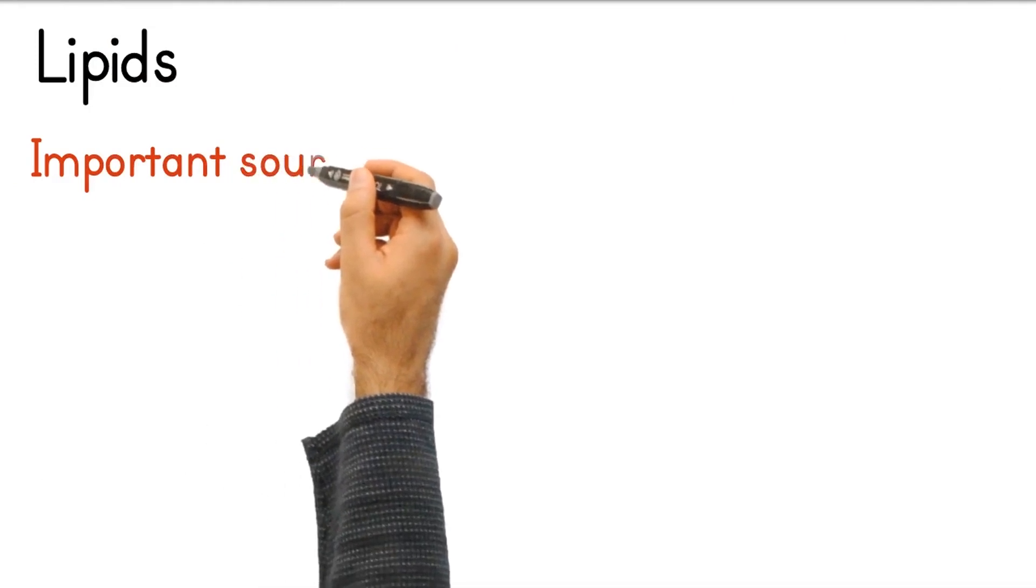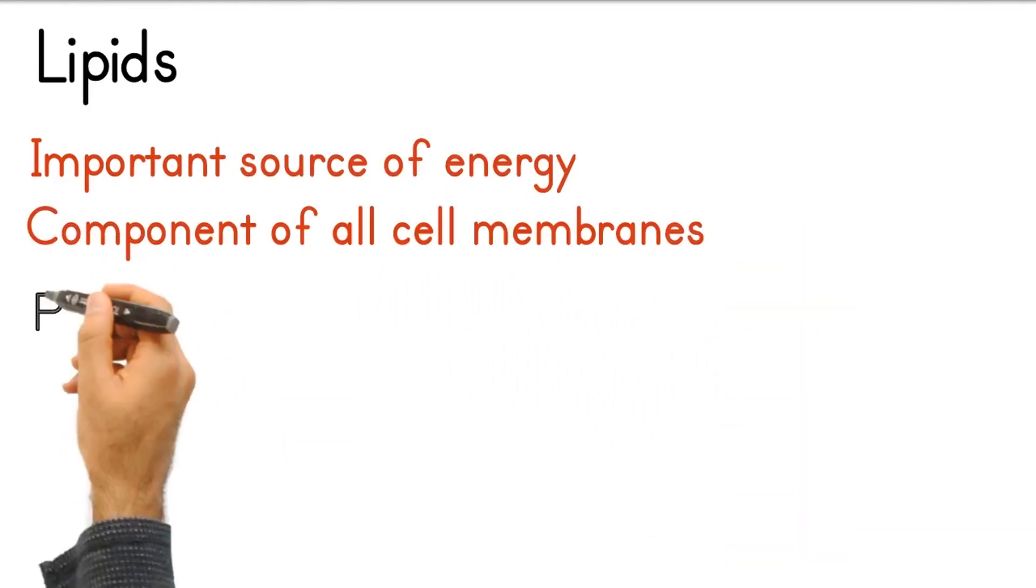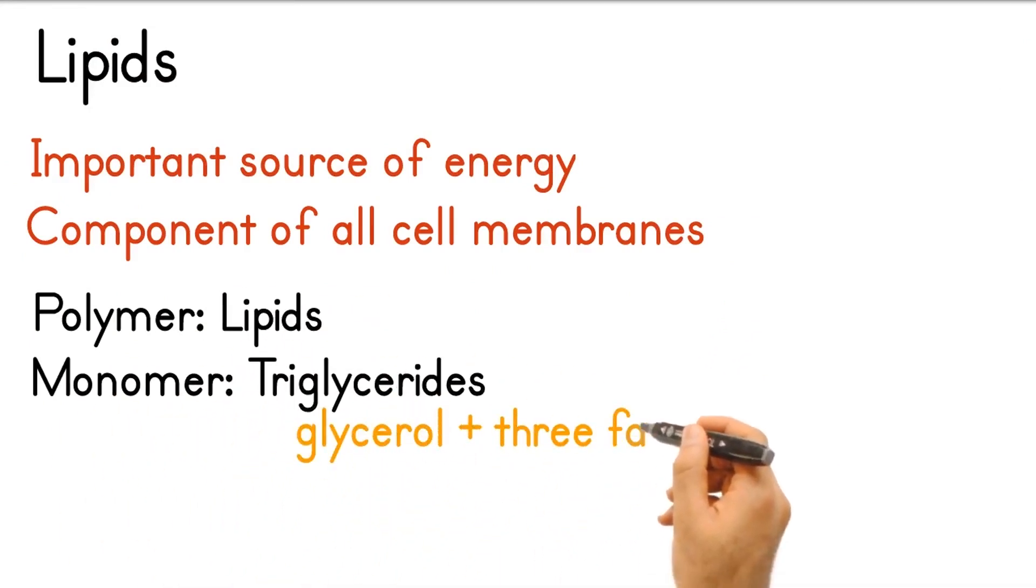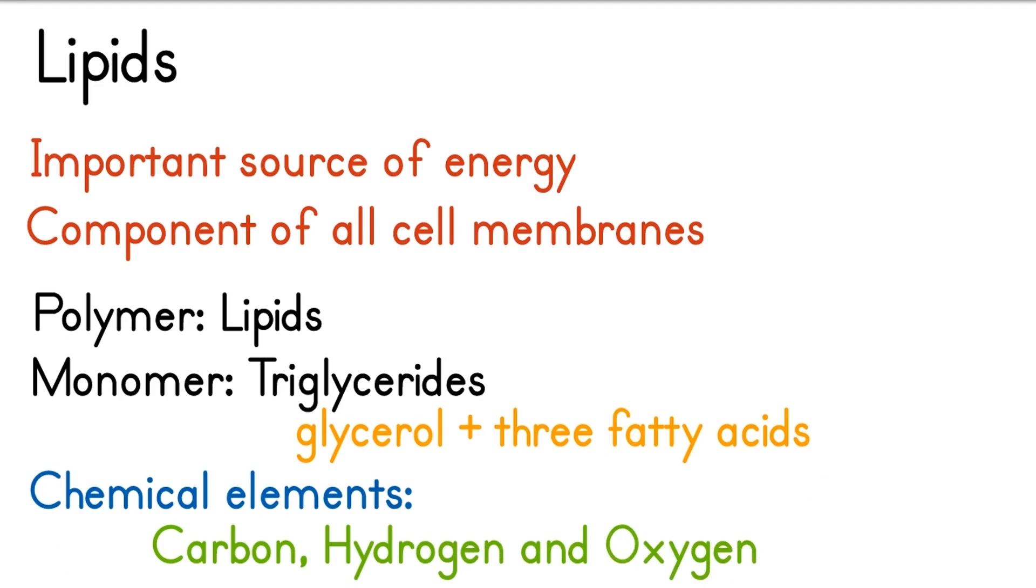Lipids. They are an important source of energy and a component of all cell membranes. The polymers are called lipids. The monomers are called triglycerides, which are made of glycerol and three fatty acids. Consists of the chemical elements carbon, hydrogen and oxygen.